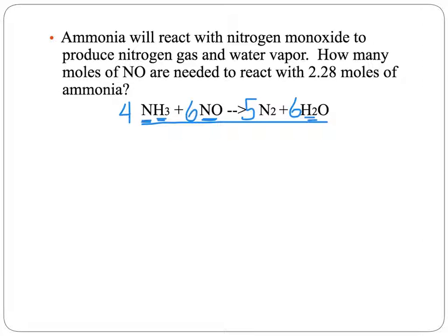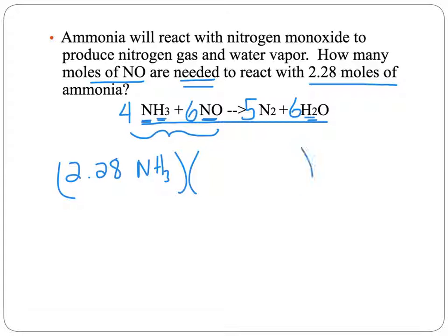The question asks: how many moles of nitrogen monoxide are needed to react with 2.28 moles of ammonia? We're just concerned with the reactants side — the ammonia and nitrogen monoxide. We know we have 2.28 moles of ammonia, so we set up our equivalency fraction with ammonia in the denominator. The mole ratio between ammonia and nitrogen monoxide is 4 to 6, taken right from the balanced equation. This is why you need to balance the equation first — if it's not balanced properly, your mole ratio will be completely wrong.